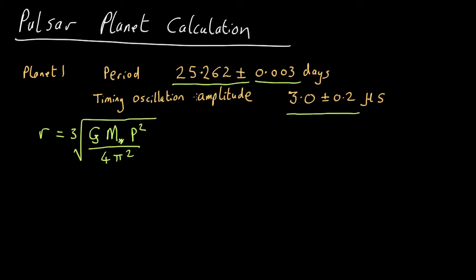So for the period, we have the value here. We have to convert to seconds by multiplying by 24 and then 60 and then 60 again. The mass of the pulsar is a bit trickier. Normally, for reasons we'll go into in the Violent Universe course, pulsars are assumed to be about 1.4 times the mass of the Sun. Everything else in there we know.